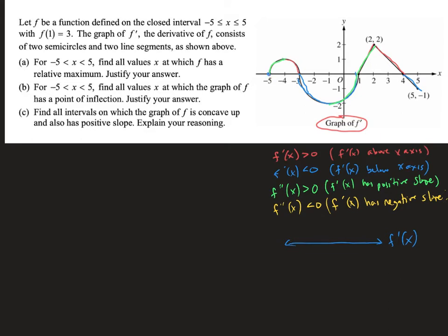Remember, we always find where it equals zero or where it's undefined, and I'm marking those points now — those are the values that go on my sign line. Then I figure out whether the first derivative is positive or negative based on whether the graph is above or below the x-axis. It's above between -5 and -3, below between -3 and 1, above between 1 and 4, and below from 4 to the end.